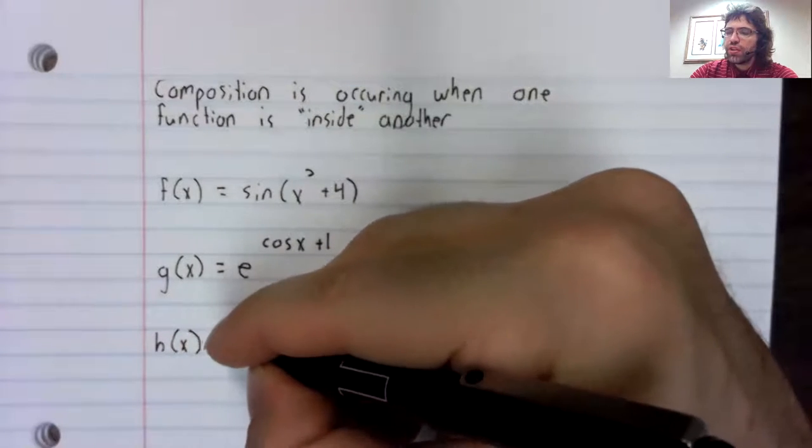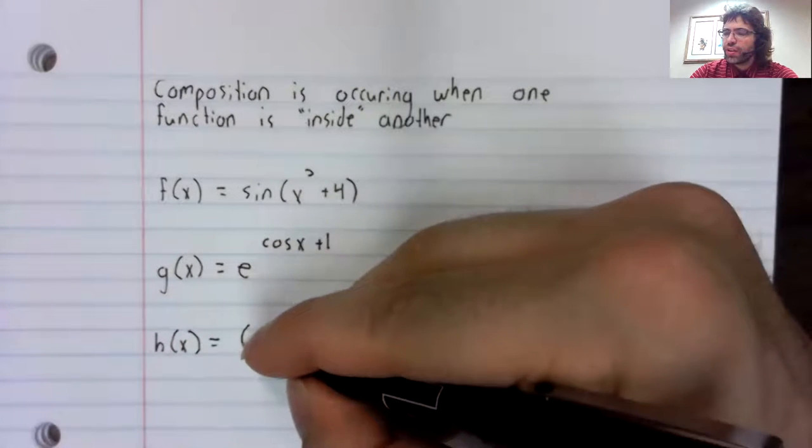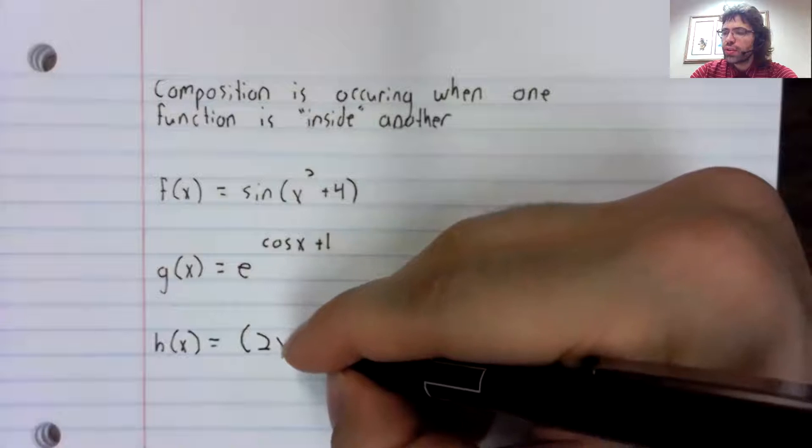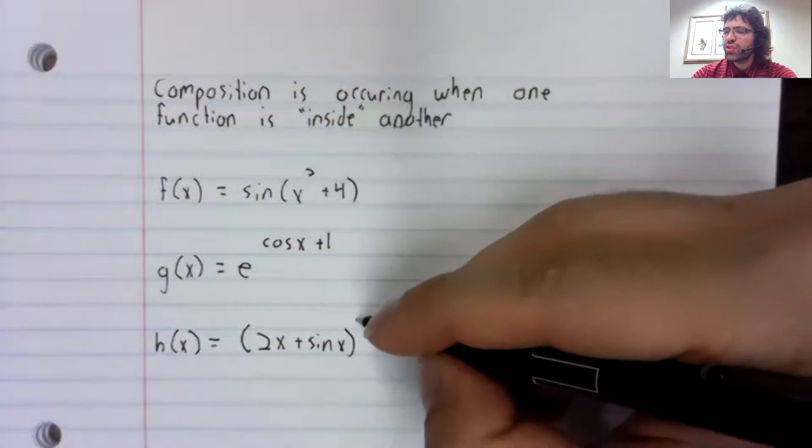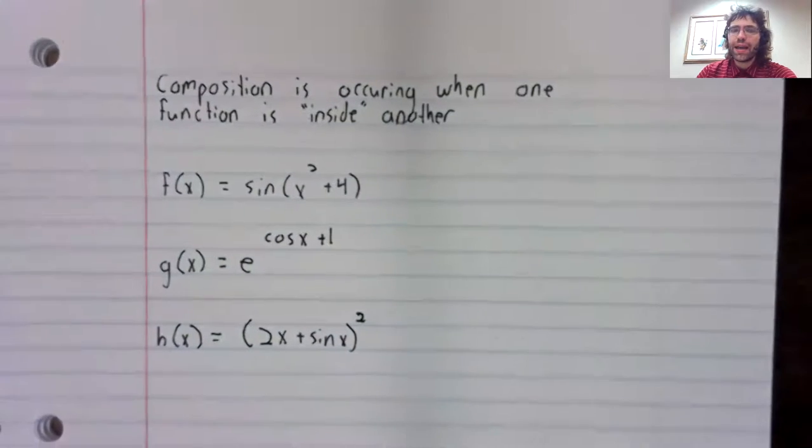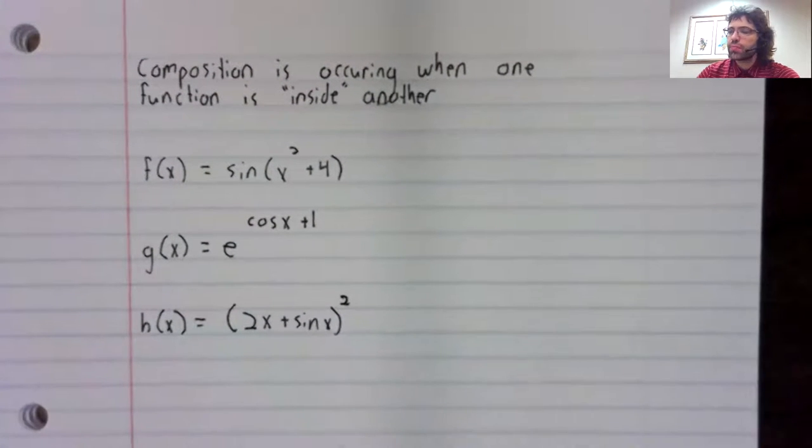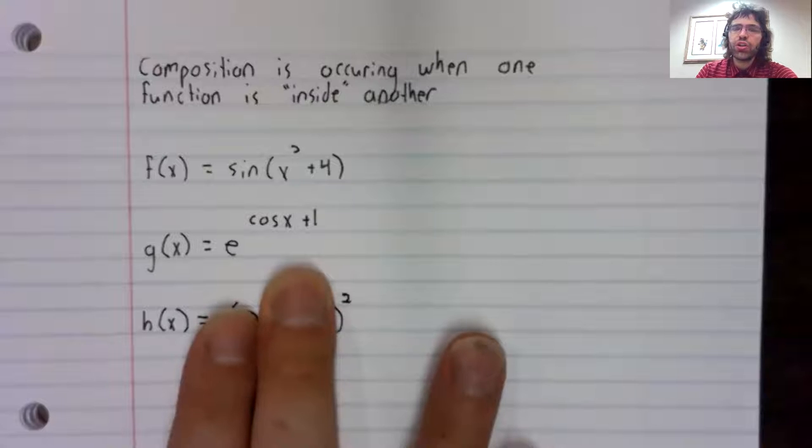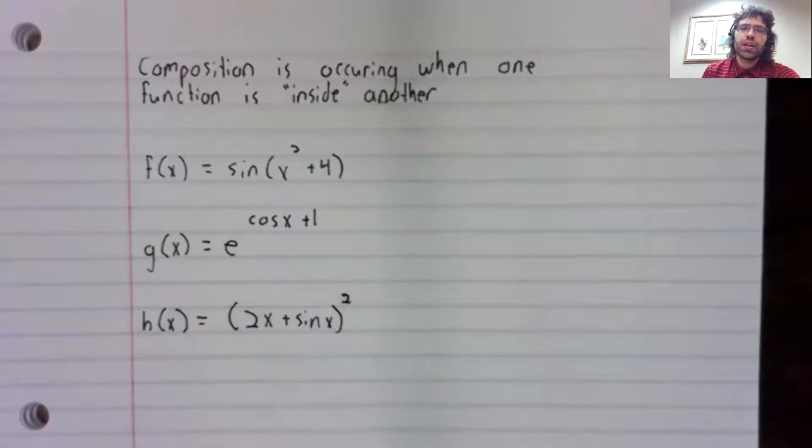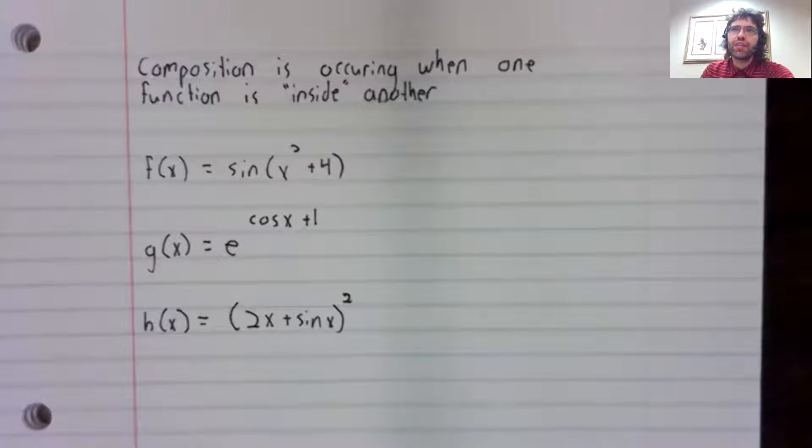H of x equals 2x plus sine of x, quantity squared. Squaring is a function, and we've got a more complicated expression inside of it.